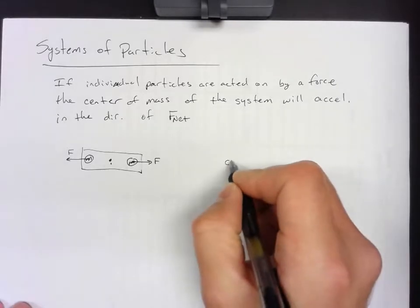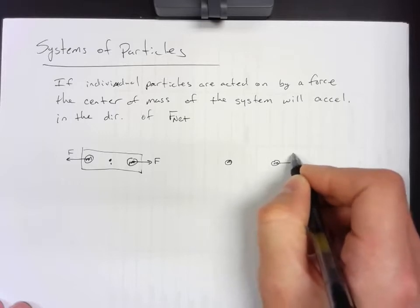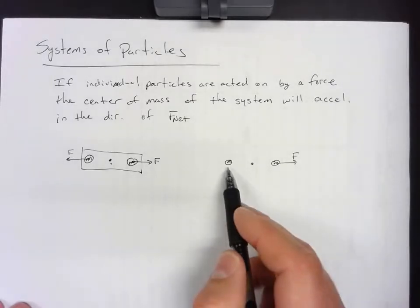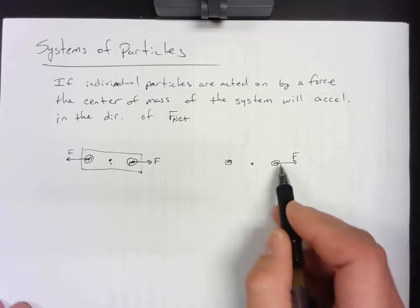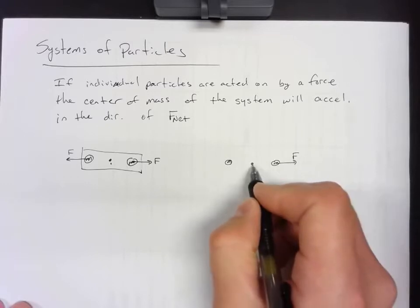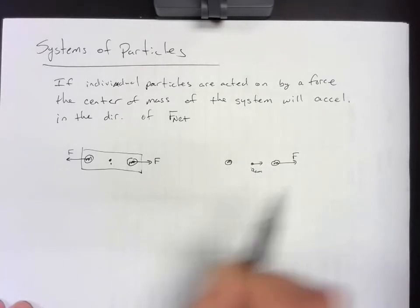If I had a different system where one mass is there, another mass here, force exerted on this mass, center of mass starts in the middle. But if we do not apply a force to this, as this mass accelerates this way, the center of mass would then accelerate in that same direction.